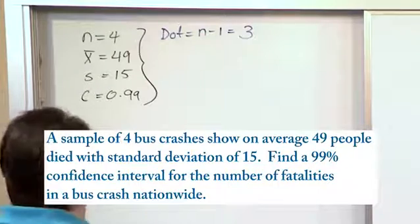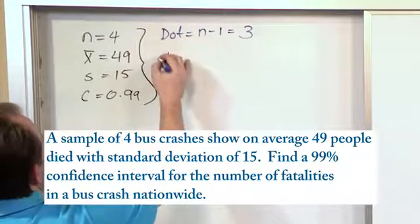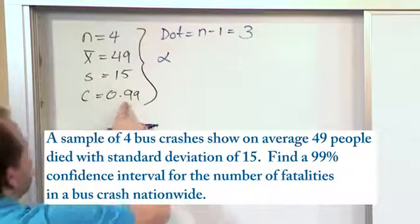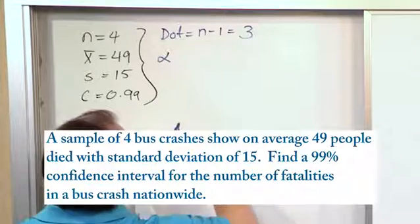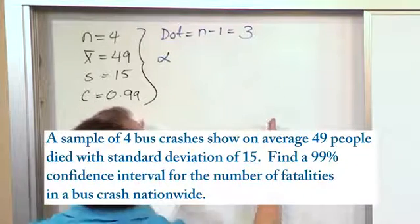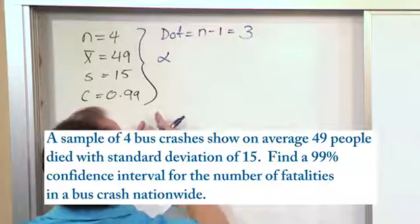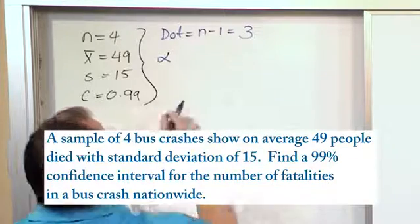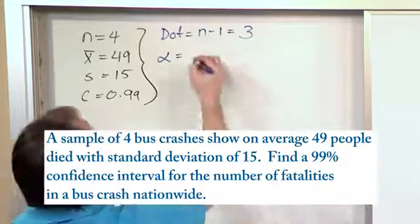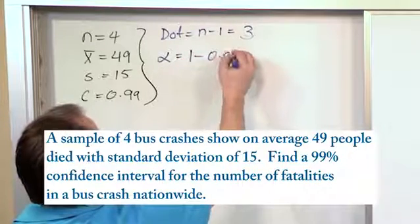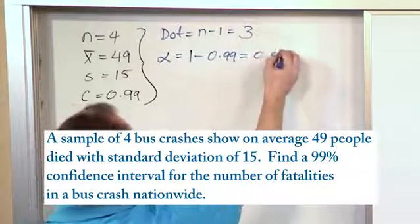So we just leave that there. And then we go and say alpha, which remember, we're looking at a 99% confidence level, which means if we look at our t distribution between these points here, 0.99 is the area of everything here. So alpha is the tail area outside of that, one minus 0.99, which is 0.01.